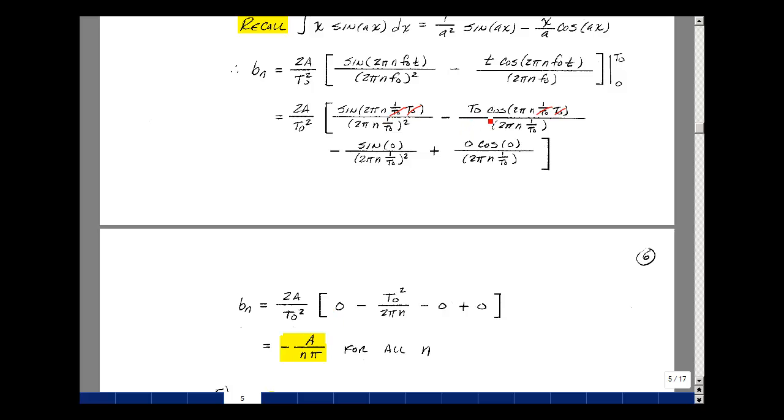Then we have t0 times the cosine of 2 pi n. When n is equal to 1, that's the cosine of 2 pi, which is 360, that's going to be equal to 1. We have t0, and then divided by 2 pi n. And the t0 comes up in the numerator, so we get a t0 squared. The sine of 0 is 0, and then 0 times anything is 0.